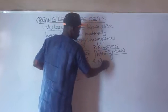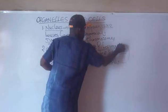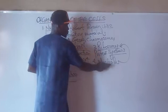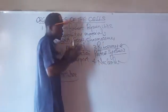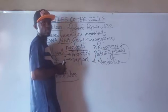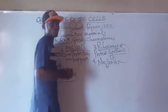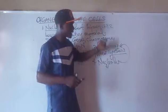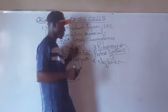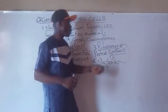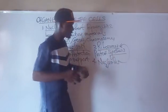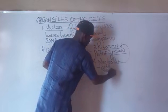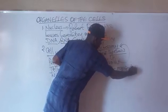Number four is the nucleolus. The nucleolus produces ribosomes. So if the nucleolus produces ribosomes, it means the nucleolus is also needed for protein synthesis. The nucleolus is a dark dense region of the nucleus that produces ribosomes and aids protein synthesis. The nucleolus is also needed for cellular respiration.